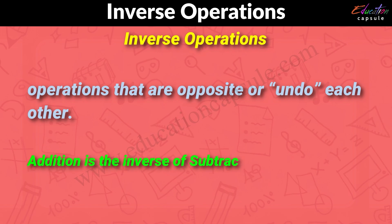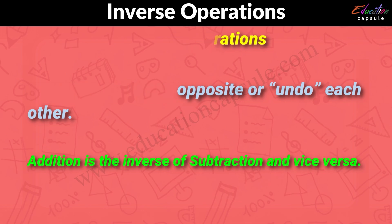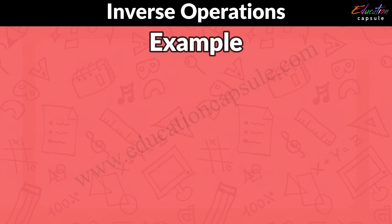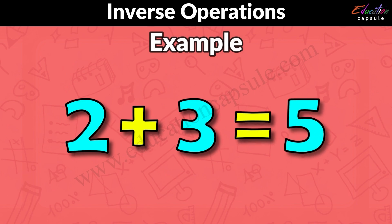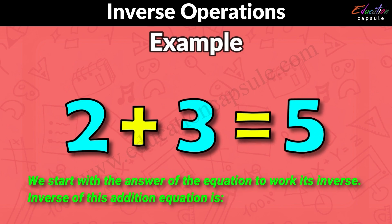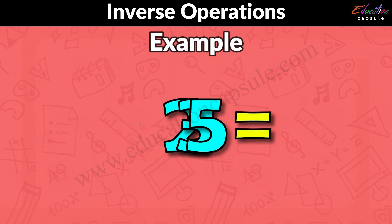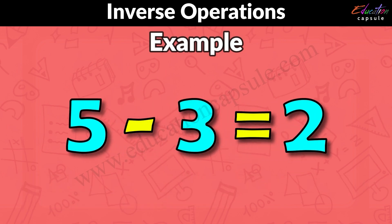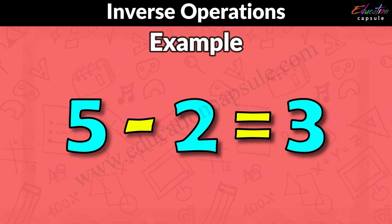Addition is the inverse of subtraction and vice versa. For example, if 2 added to 3 gives you 5, we start with the answer of the equation to work its inverse. The inverse of this addition equation is 5 take away 3 is equal to 2, or 5 take away 2 is equal to 3.